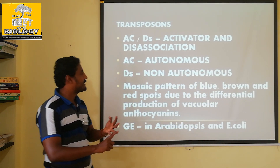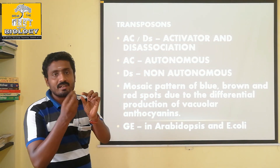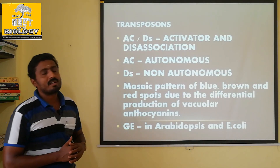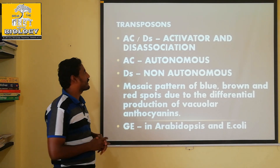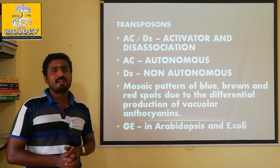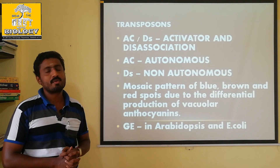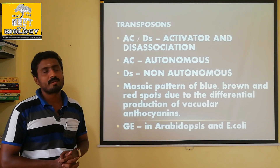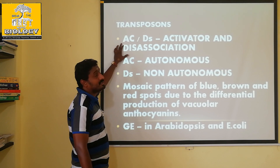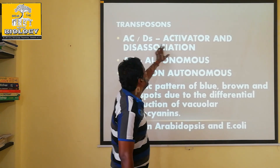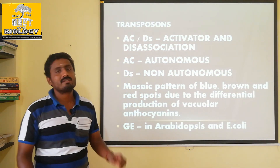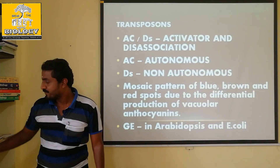There are blue colors, red colors, brown colors, and spots in maize — and that is from transposons, as discovered by McClintock, for which she received the Nobel Prize. In the transposons of maize, there are two types of DNA segments: one AC (Activator) and one DS (Dissociation).